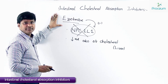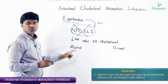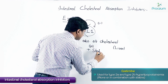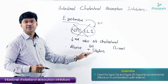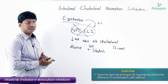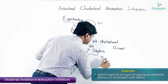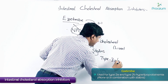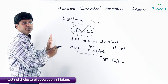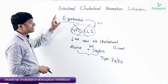Now, azitimide either is used alone or it is used in combination with statins. It is indicated in type 2a and type 2b hyperlipoproteinemia. So this is about one group of anti-hyperlipoproteinemia drugs which reduces cholesterol absorption from the intestines, which is nothing but azitimide.